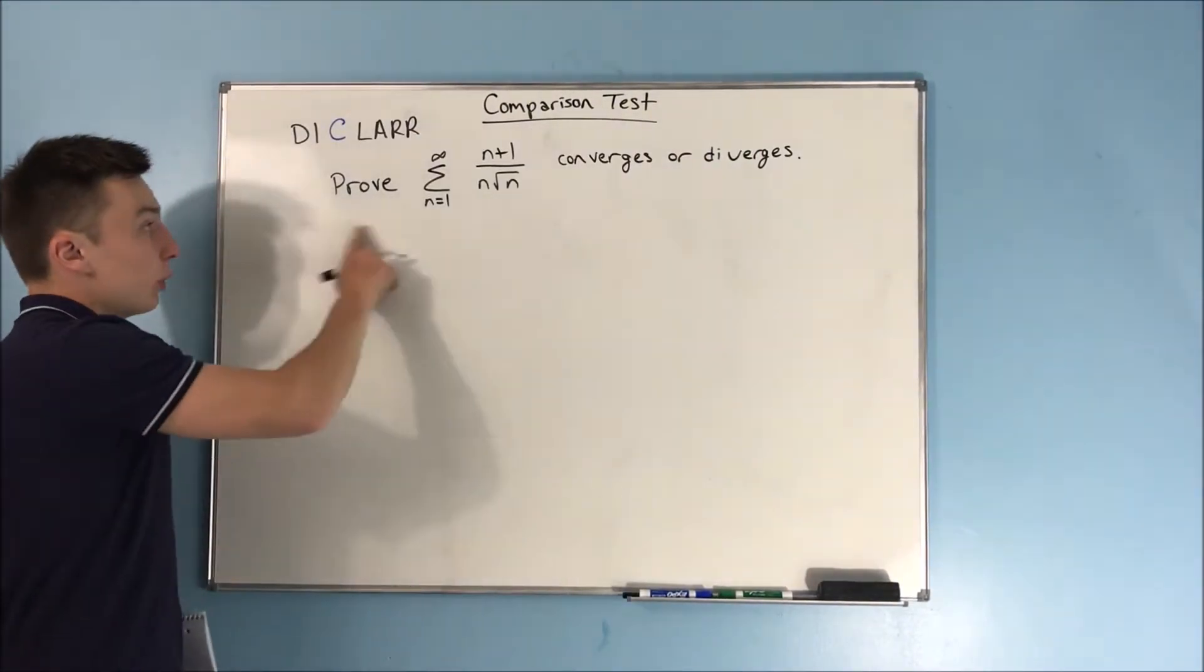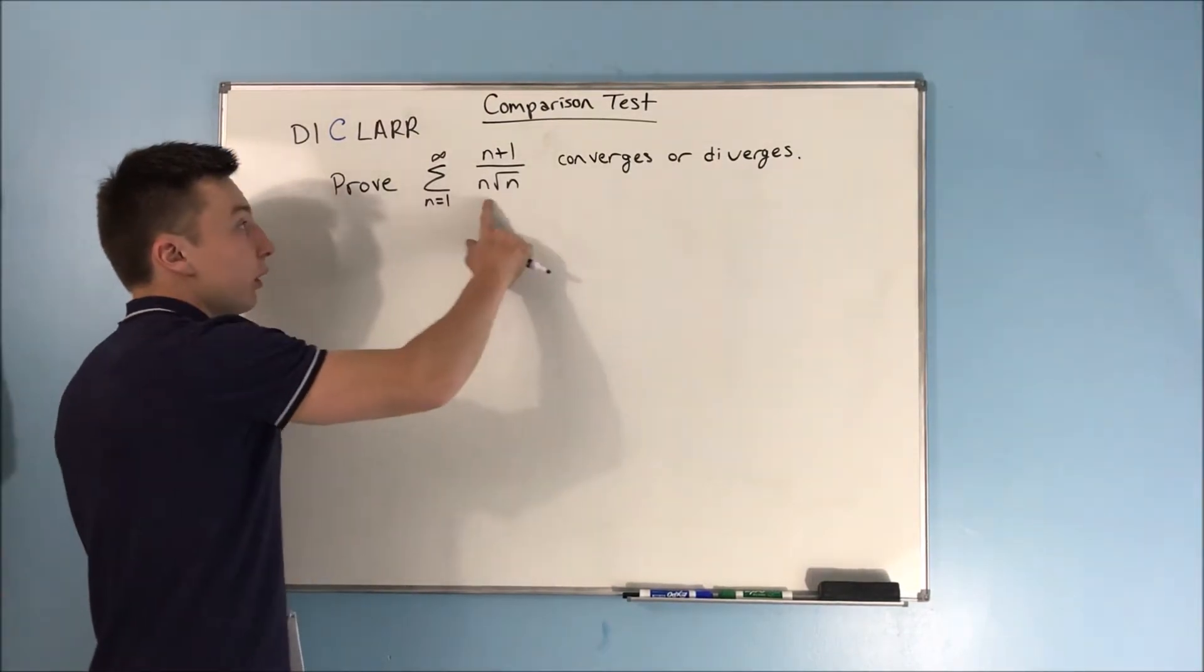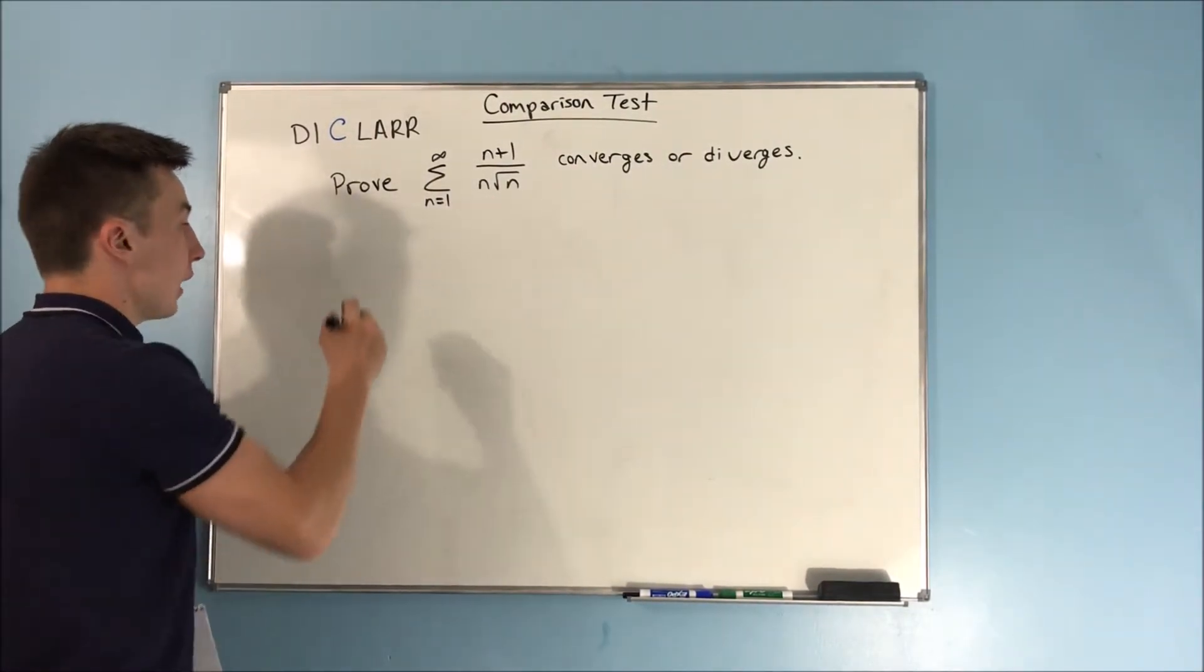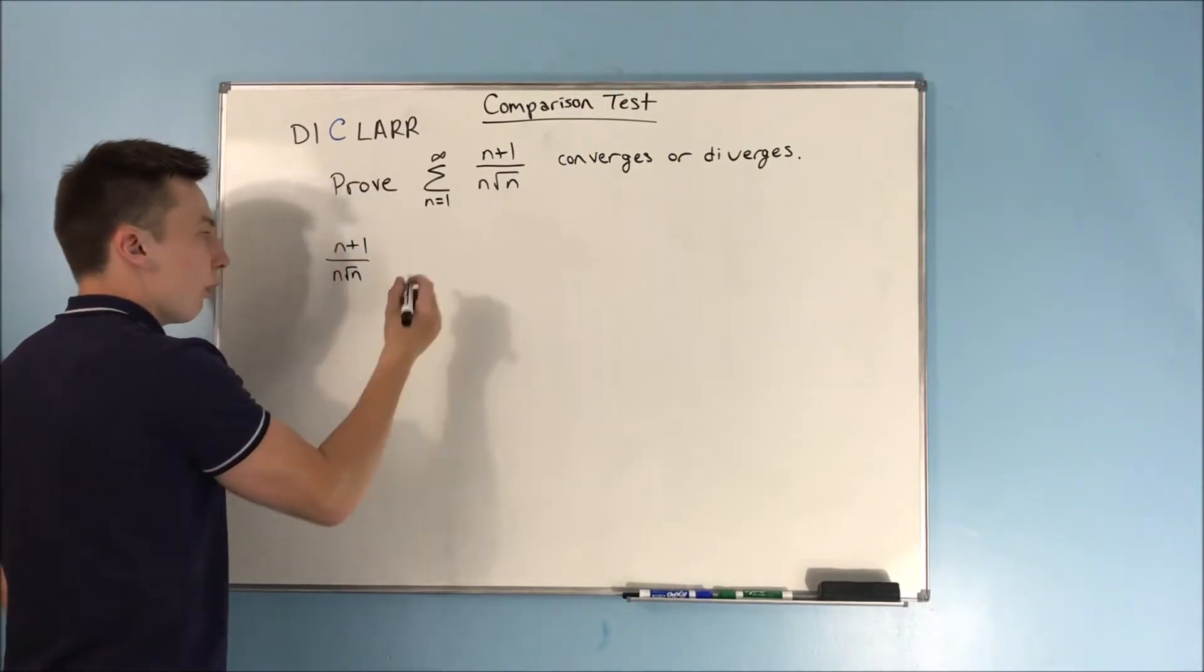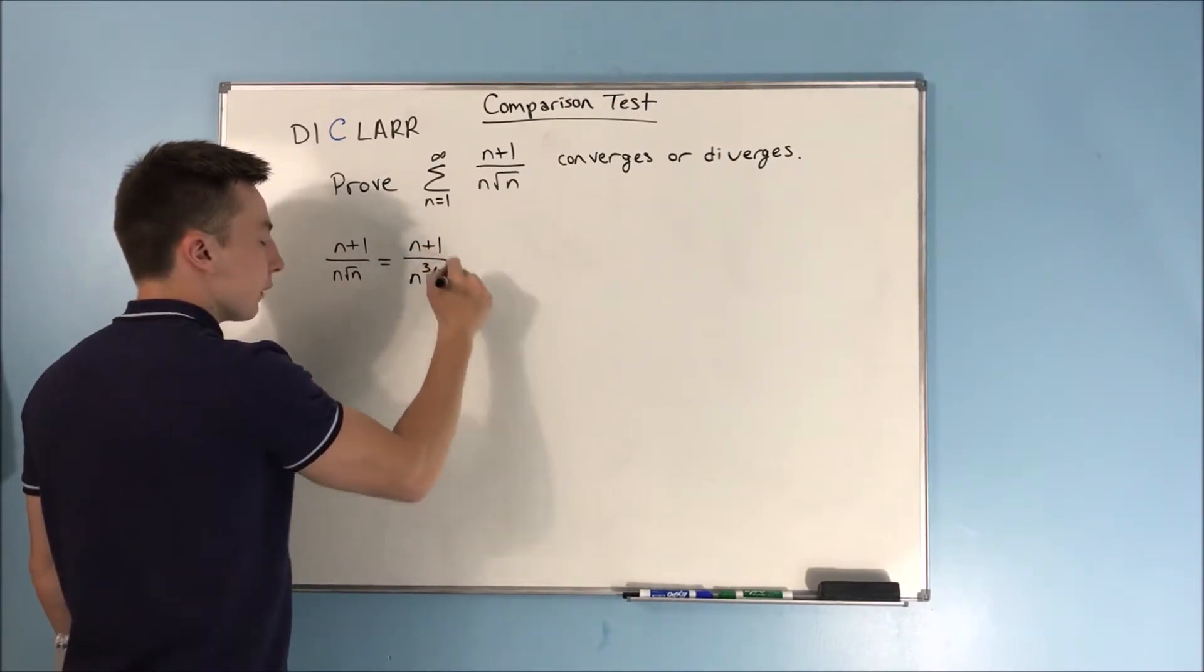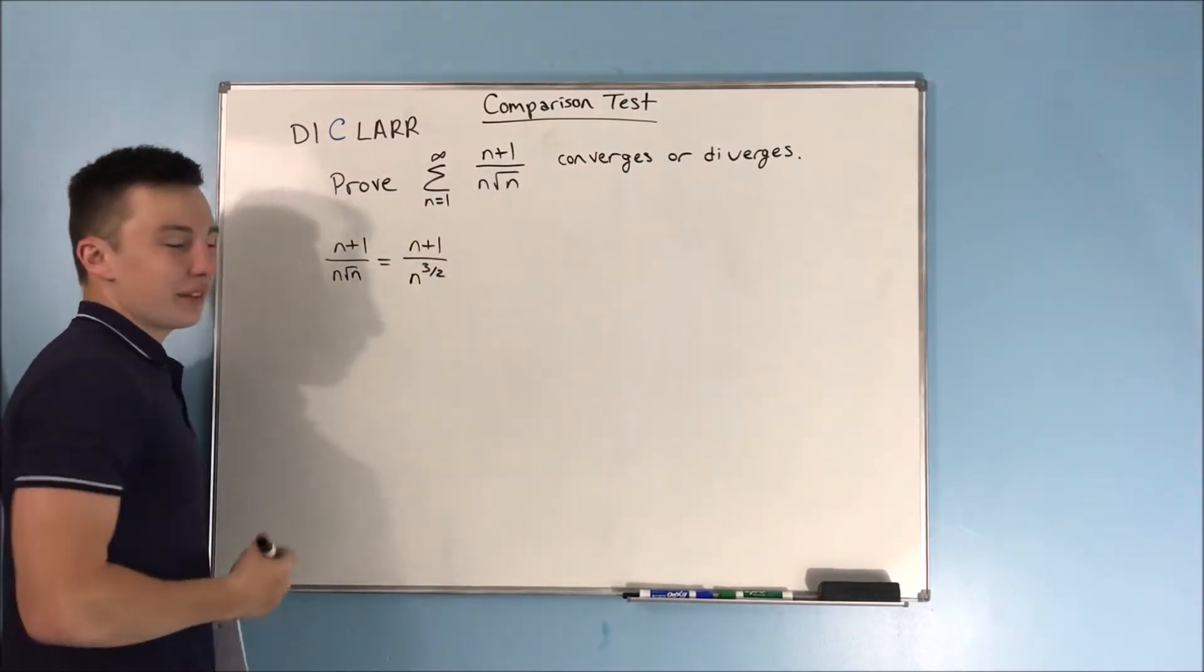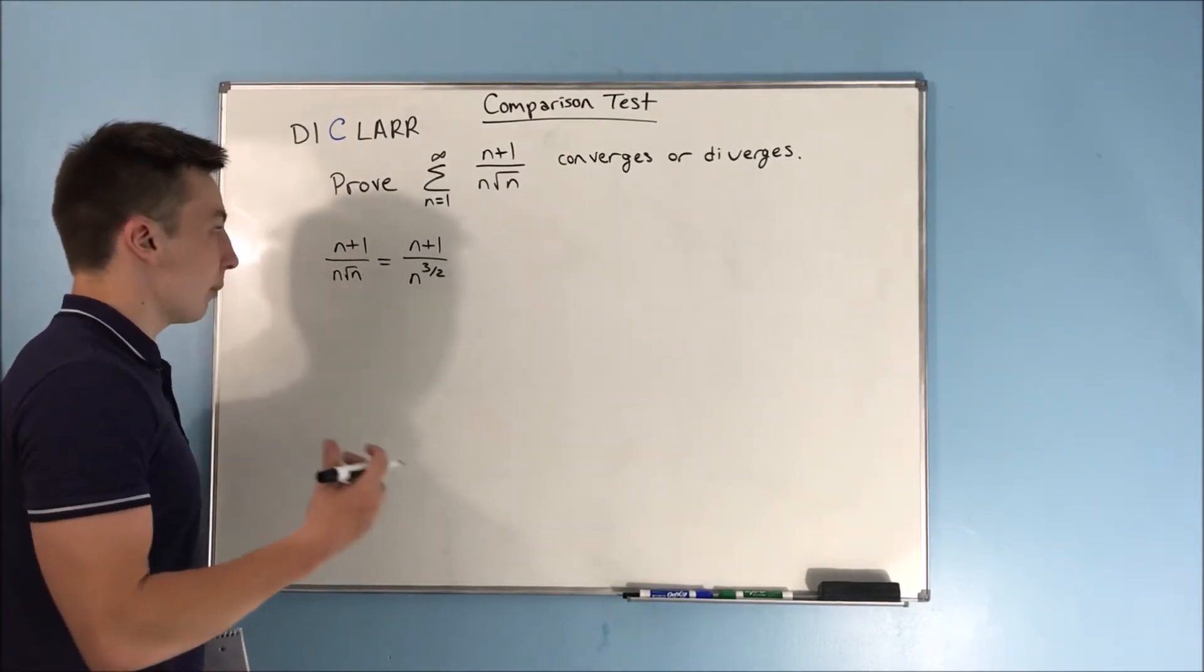Now we want to prove that the sum from n equals 1 to infinity of n plus 1 over n rad n converges or diverges. Now this is very similar, this n plus 1 over n rad n. Well that's basically the same thing as saying n plus 1 over n to the 3 halves. And that n plus 1 over n to the 3 halves, it's got that little constant on the n, that plus 1, it's kind of going to be a pain in the butt to deal with.